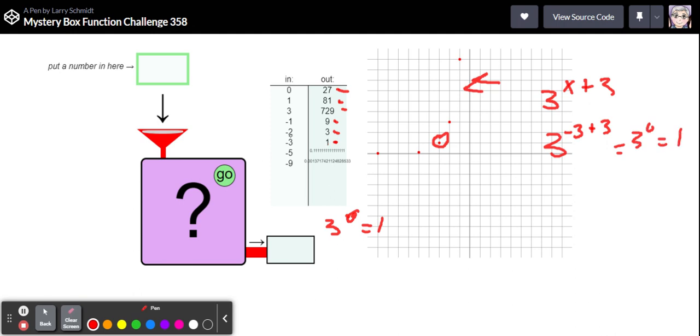You might want to test that with another point. Let's try one. So three to the one plus three, well that'd be three to the fourth and that is 81.